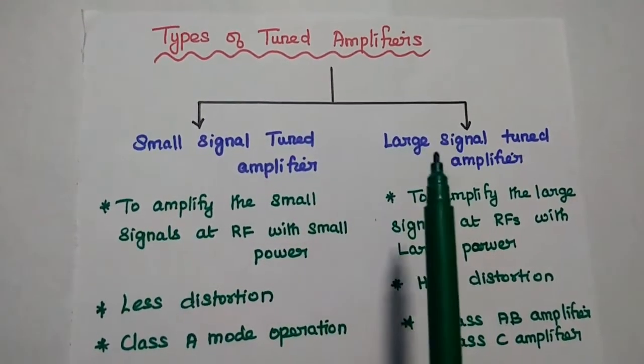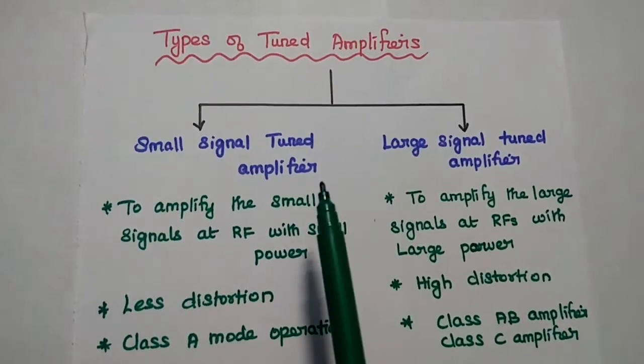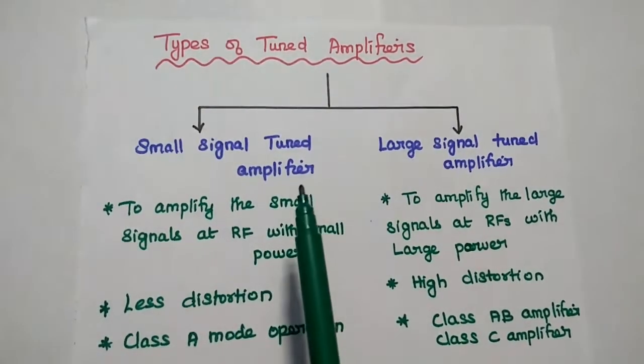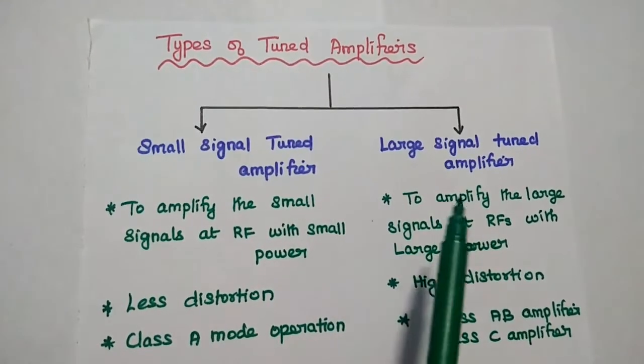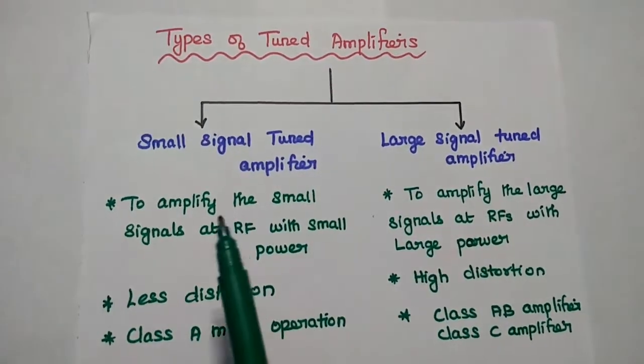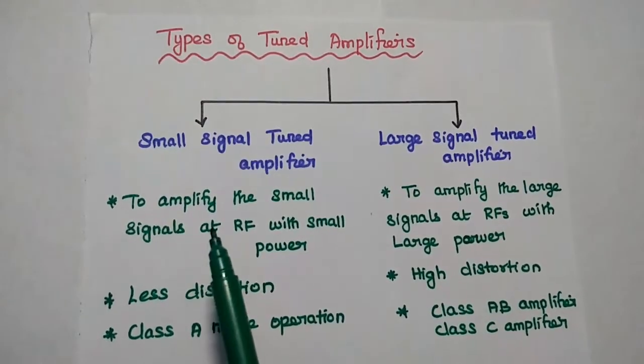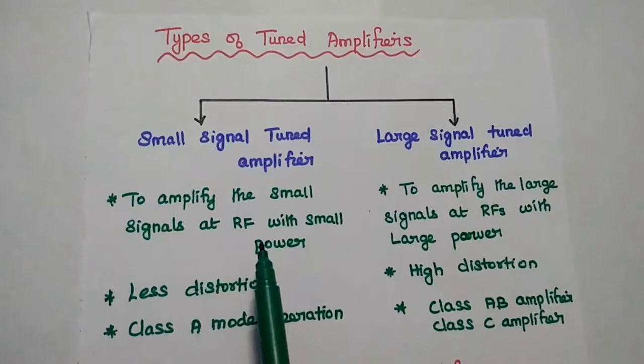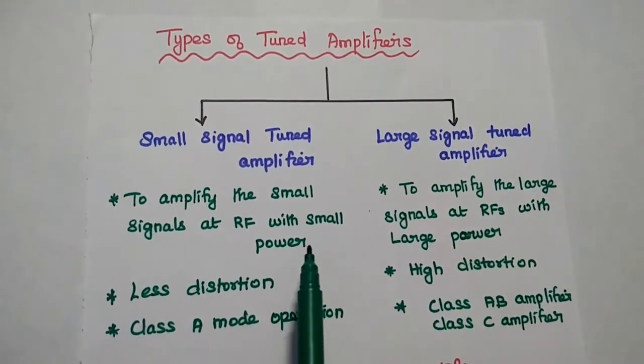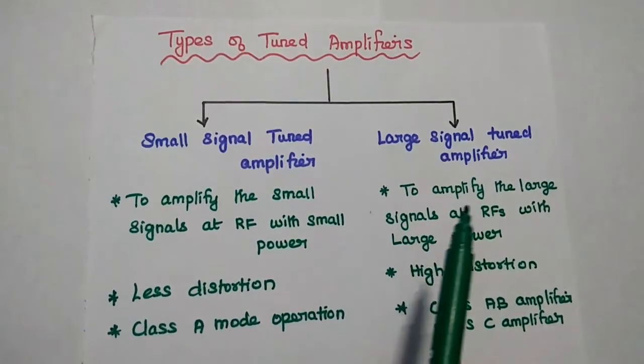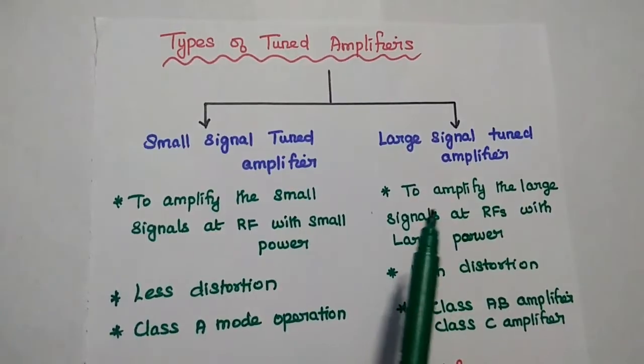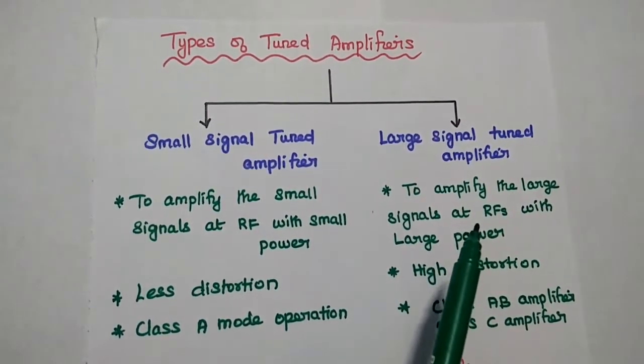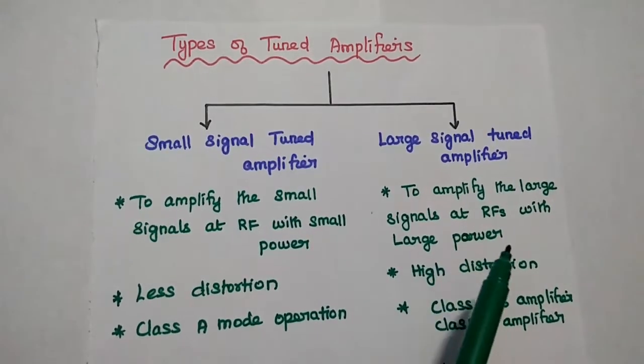Types of tuned amplifiers: Tuned amplifier is broadly classified into two types - small signal tuned amplifier and large signal tuned amplifier. Small signal tuned amplifier is widely used to amplify the small signals at radio frequencies with small power requirement. Large signal tuned amplifier is widely used to amplify the large signals at radio frequencies with large power requirement.